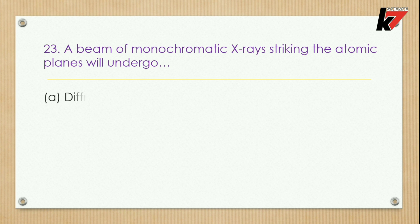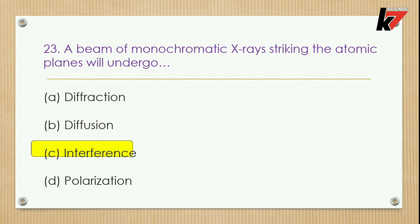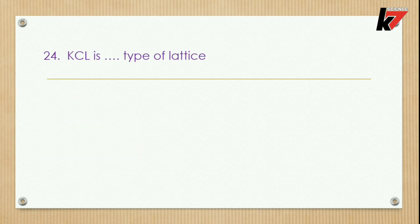Question 23: A beam of monochromatic X-rays striking the atomic planes will undergo — options: diffraction, diffusion, interference, or polarization. The correct option is interference — option C is correct.